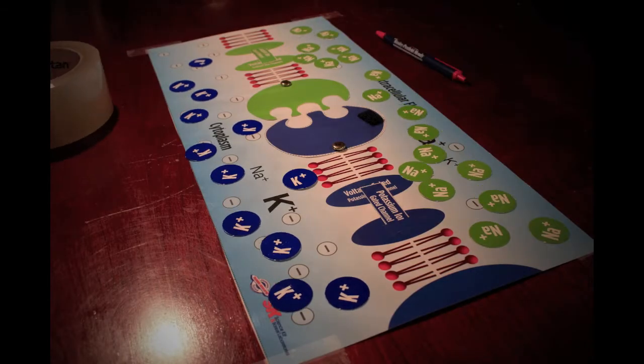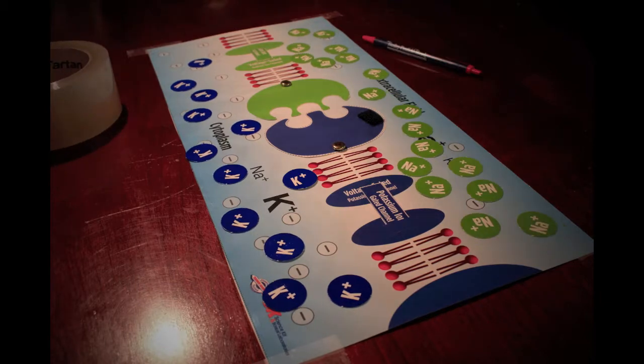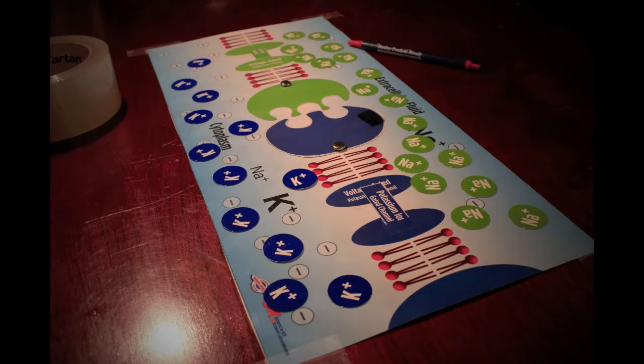In an axon at resting state, sodium ions are concentrated outside the cell. Potassium ions are inside the cell, as well as negatively charged proteins.